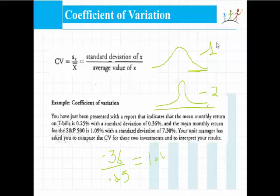The coefficient of variation is the risk per unit of return — if standard deviation is the risk, then it is the risk per unit of return. For every unit of return, I have to take 1.44 units of risk. So for 0.25 units of return, I take 0.36 units of risk, meaning for one unit of return I take 1.44 times the risk. This is the amount of risk per unit of return for T-bills.